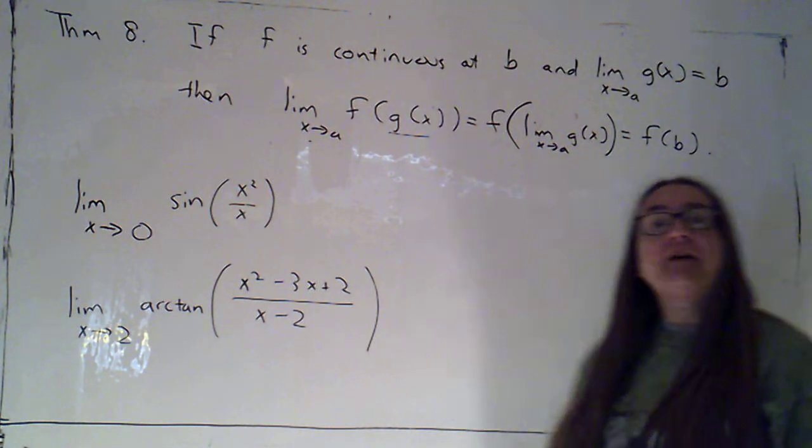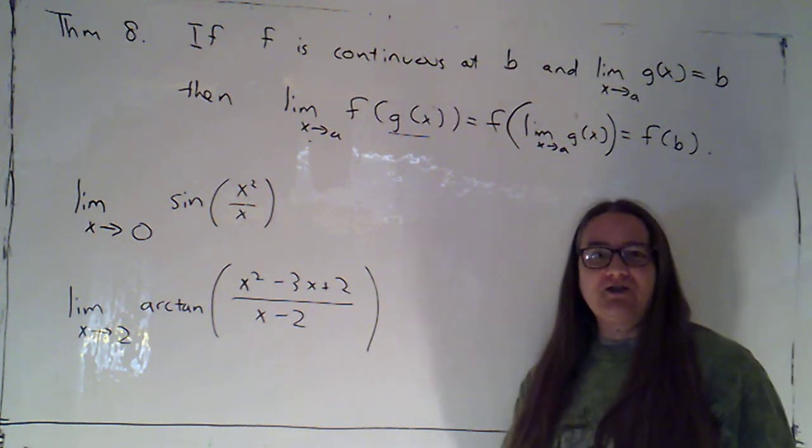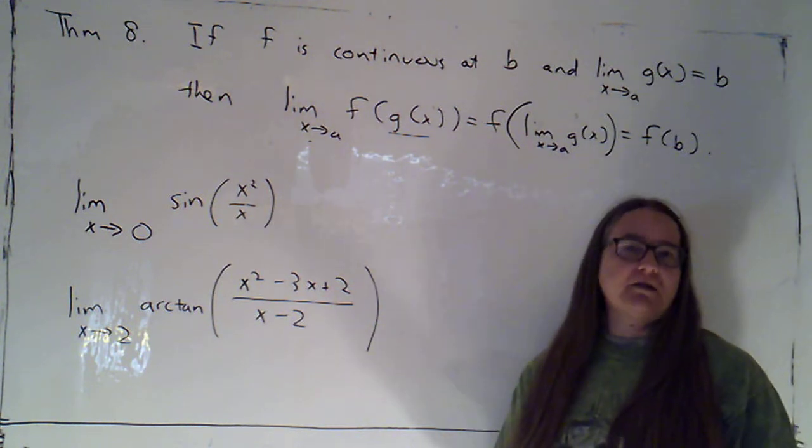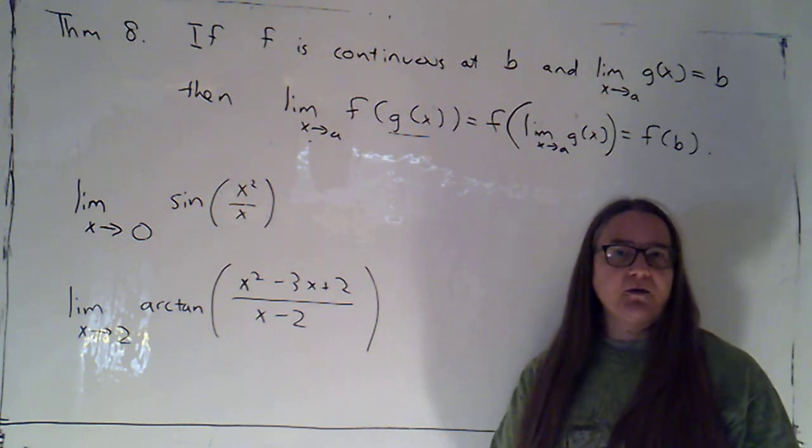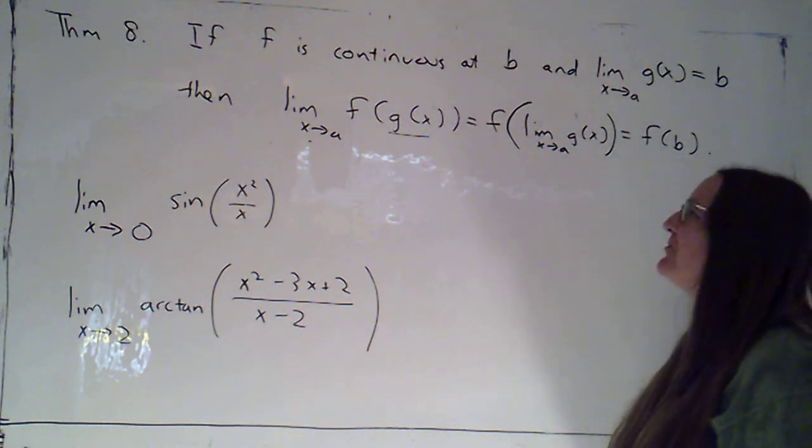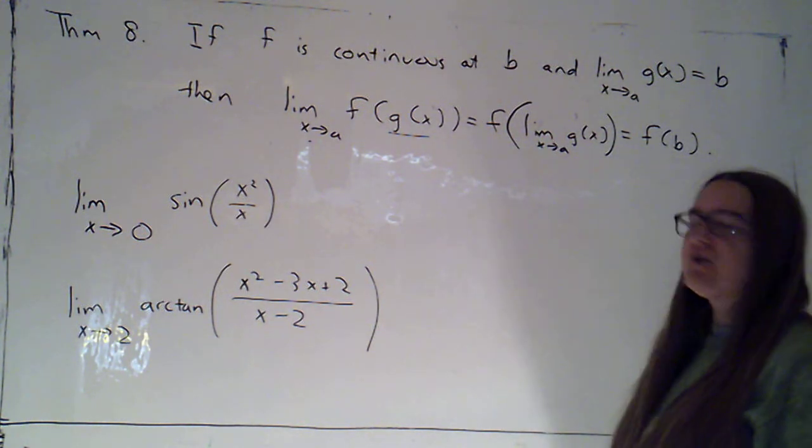Theorem 8 tells us about evaluating limits of function compositions, and Theorem 9 then said that if you compose continuous functions, the result will be continuous. Of course the way you prove that is by evaluating the limit as you approach the point and showing that that was the function value.